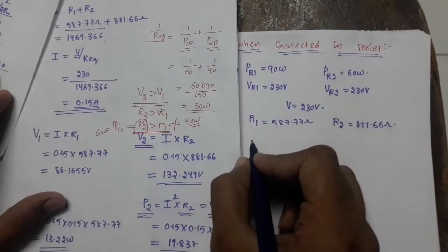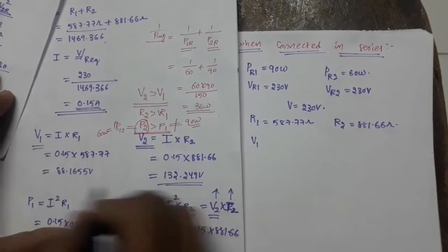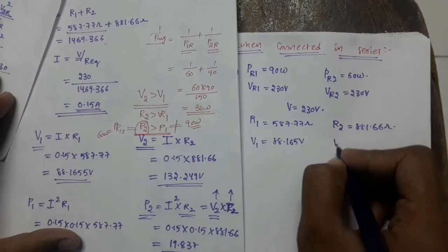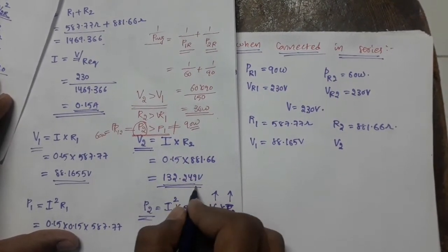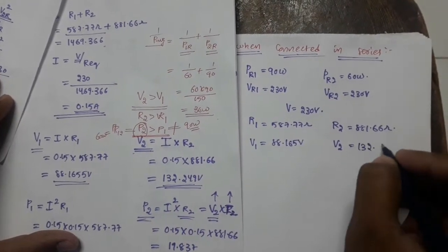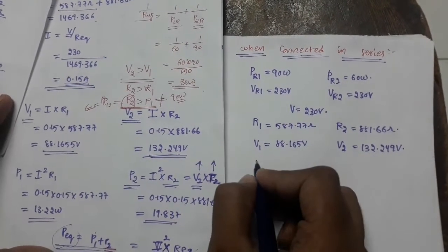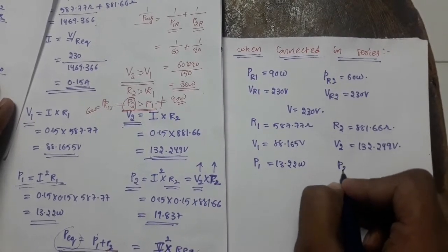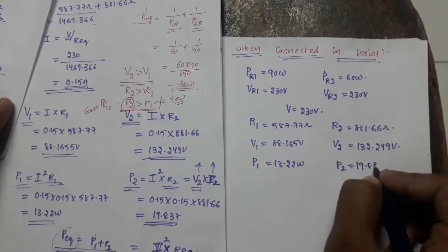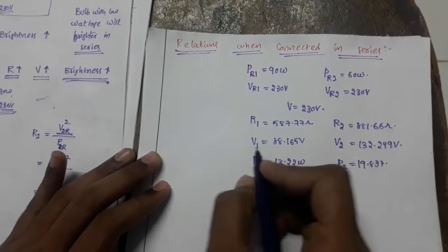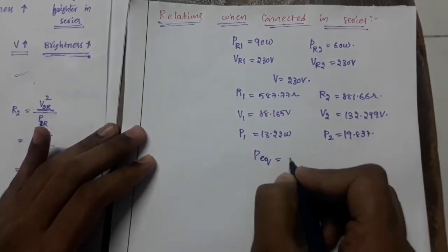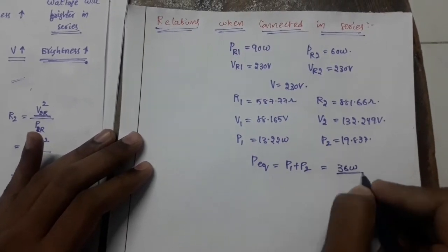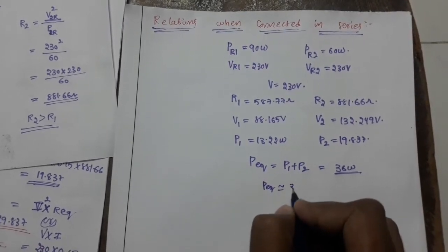Coming to the voltage: voltage drop across bulb 1 equals 88.165 volts, whereas voltage drop across bulb 2 equals 132.249 volts. Power consumed by bulb 1 equals 13.22 watts, power consumed by bulb 2 equals 19.837 watts. Equivalent power equals P1 plus P2, which is approximately 36 watts — or about 34.5 watts depending on rounding.